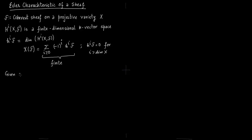Now given an exact sequence of sheaves 0 to F to G to H to 0, the Euler characteristic of G is nothing but Euler characteristic of F plus Euler characteristic of H. So we will prove this result.